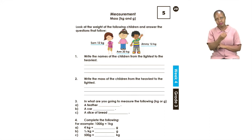Number 1 is saying write the names of the children from the lightest one to the heaviest. Now you can see from the numbers which ones you are going to write first. Remember light which means that it's not that heavy and then heavy which means it's not that light. So you are going to do number 1.